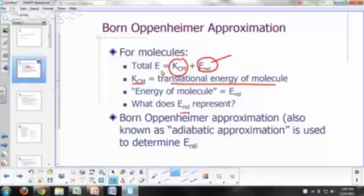So what does that relative energy represent? That represents the energy of the electrons and the relative energy of the particles within the molecules. The Born-Oppenheimer approximation, also known as the adiabatic approximation, we use that to determine that relative energy.